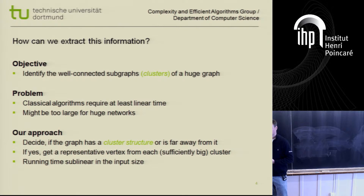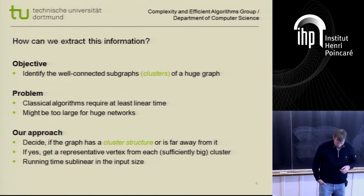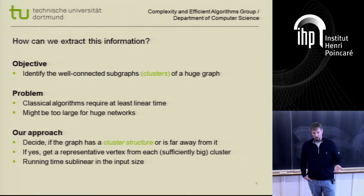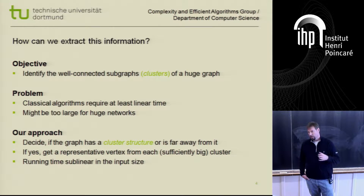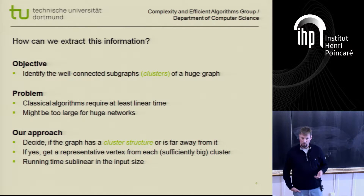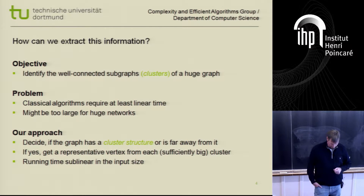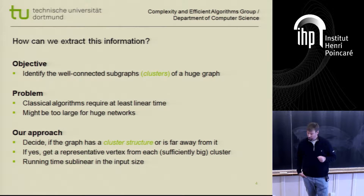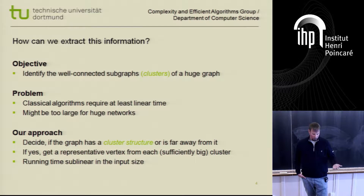For example, if you want to compute clusters of the web graph, the size of the graph is already a big challenge. We could try to use classical algorithms which require at least linear running time, but today I really want to do something faster. I want to use some sort of random sampling process to identify if a graph has a cluster structure — not really compute the clusters, but just tell if the graph consists of some clusters or not.